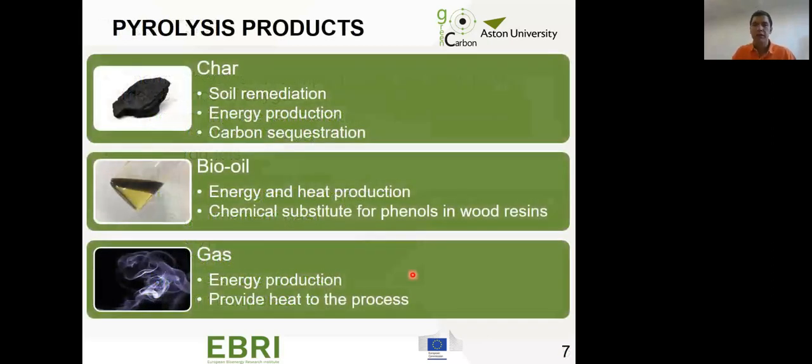These are the three products we can obtain. First, char. In the Green Carbon project we are focusing a lot on this product. It has many applications. Mainly we can use it as soil remediation, energy production, carbon sequestration instead of releasing it into the atmosphere, and to absorb liquids or gases into the char itself.